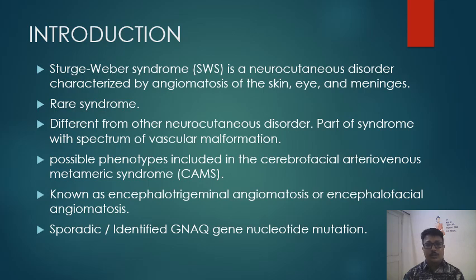Sturge-Weber syndrome is a neurocutaneous disorder or phacomatosis which is characterized by angiomatosis of the skin, eye, and the meninges. It is a rare syndrome, occurring in 1 in 50,000 to 2,300,000 people. It is different from other neurocutaneous disorders because it is part of a syndrome with a spectrum of vascular malformation.